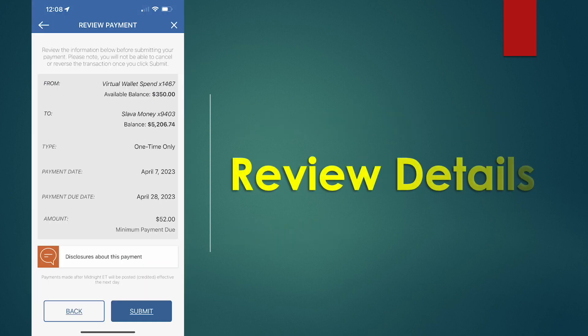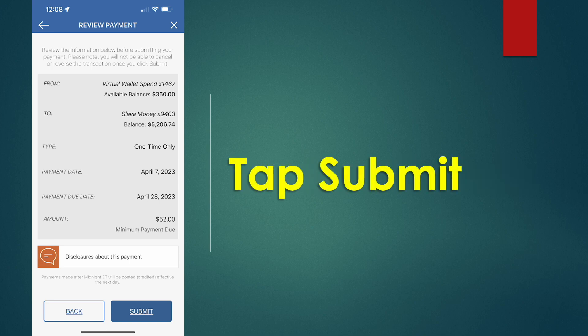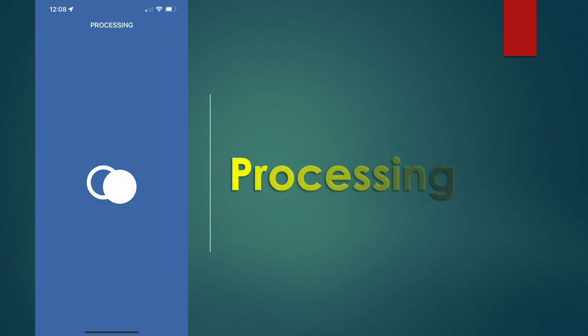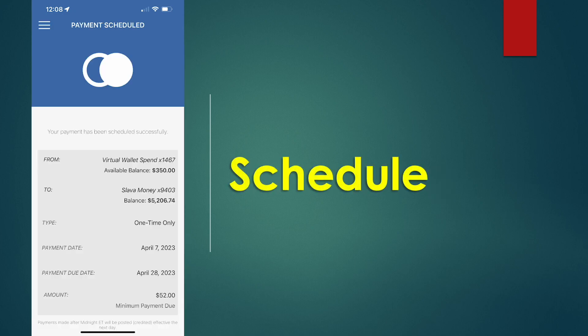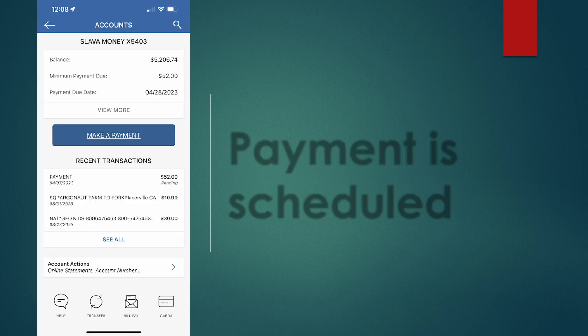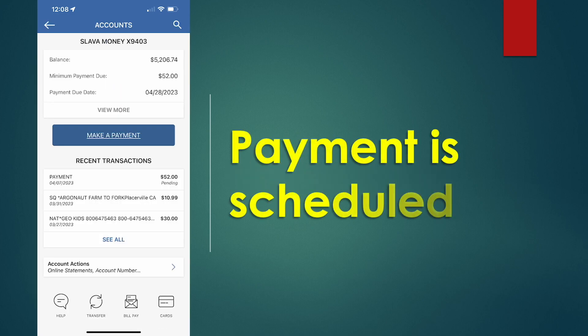Finally, review all the details and tap Submit. The PNC app will process your request, and after a few seconds your payment is scheduled. You can see it in Pending Transactions.